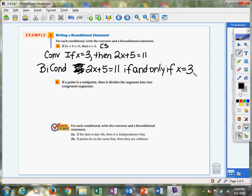Okay. Let's look at b. If a point is a midpoint, then it divides a segment into two congruent segments. So here's our conditional. So our converse, we're going to switch that around.